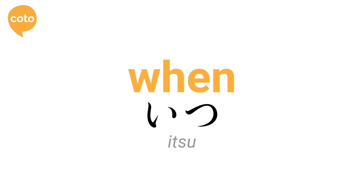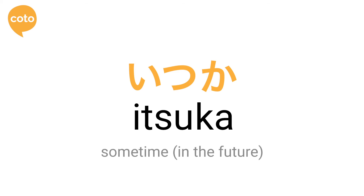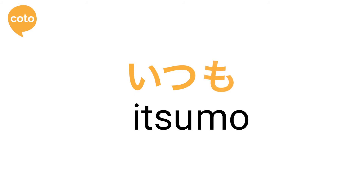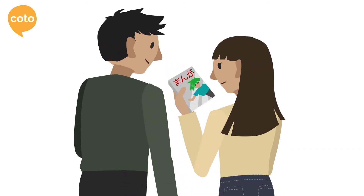To express 'when' in Japanese, you may use the word 'itsu.' Unlike 'dare,' attaching 'kara' to 'itsu' makes 'itsu kara,' a word that indicates sometime in the future. Also, if you attach 'mo' to the word, it becomes 'itsu mo,' which is translated into 'always,' 'usually,' or 'all the time.'